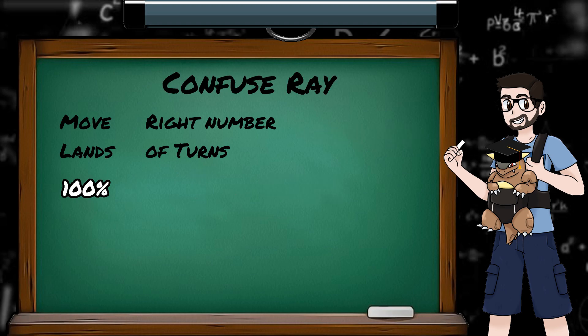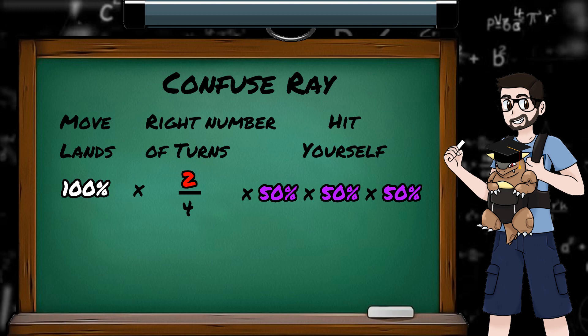Now for Confuse Ray. It's 100% accurate, so ignoring a gen 1 miss we're guaranteed to land the confusion. To get our 3 hits off, we need the enemy to stay confused for at least 4 turns. If we rolled a 3, they would snap out on the start of their third turn and finish us off, because you don't miss the turn you snap out of confusion. So we have a 2 out of 4 chance to get the roll we want, either a 4 or a 5. But then we have an additional probability to consider. Unlike with sleep, confusion is not a guarantee for the opponent to miss their turn. So for each of the 3 turns where we'll be dealing damage, we need the enemy to hit themselves in confusion each time. So we have 100% to land, and then 2 out of 4 to get the roll, and then 50% times 50% times 50% for the 3 confusion flips, giving us a measly 6.25% chance.